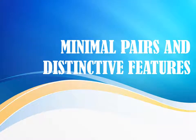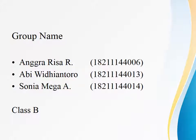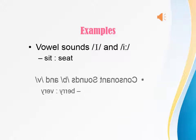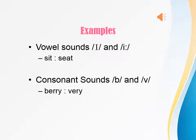Minimal Pairs and Distinctive Features. A minimal pair is a pair of words that vary by only a single sound, usually meaning sounds that many confuse English learners. For example, the vowel sound minimal pair /ɪ/ and /iː/, like in 'sit' and 'seat'.